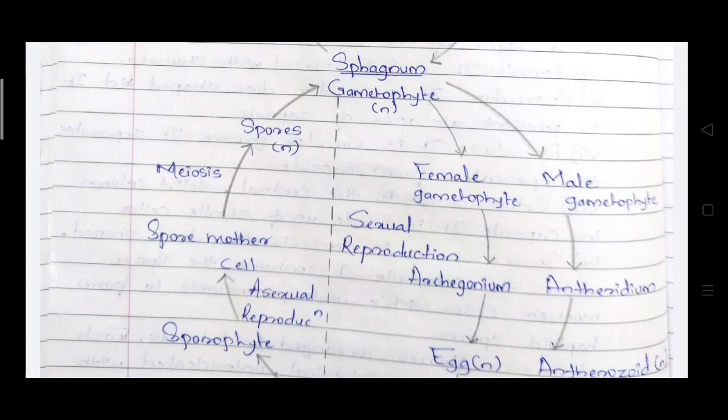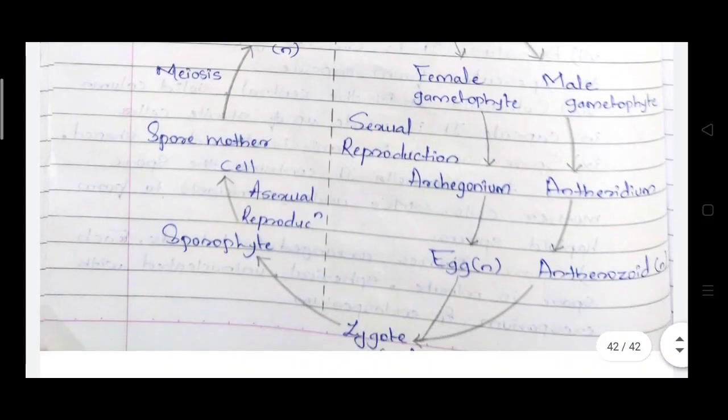In the gametophytic generation, the Sphagnum gametophyte is in a haploid stage. Special branches arise and they form the female gametophyte and male gametophyte. The female gametophyte produces the archegonium and the male gametophyte produces the antheridium.